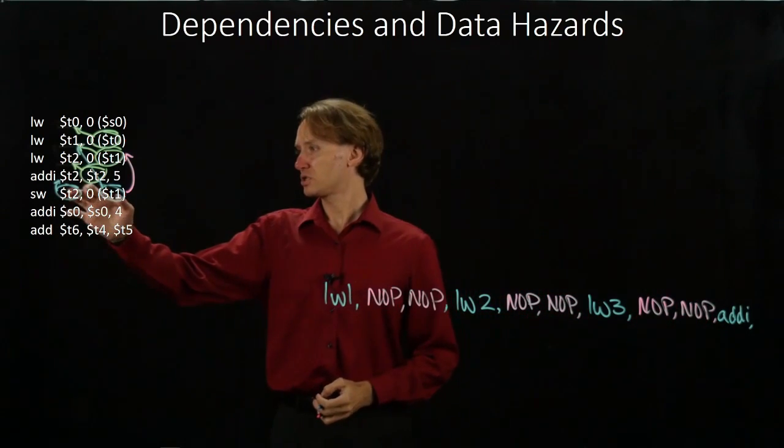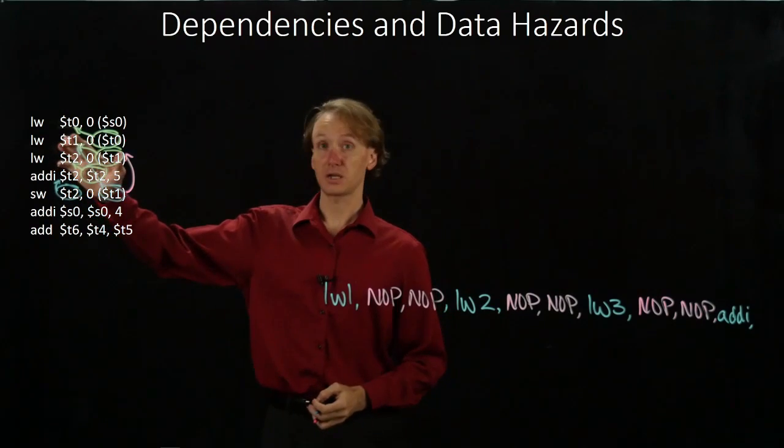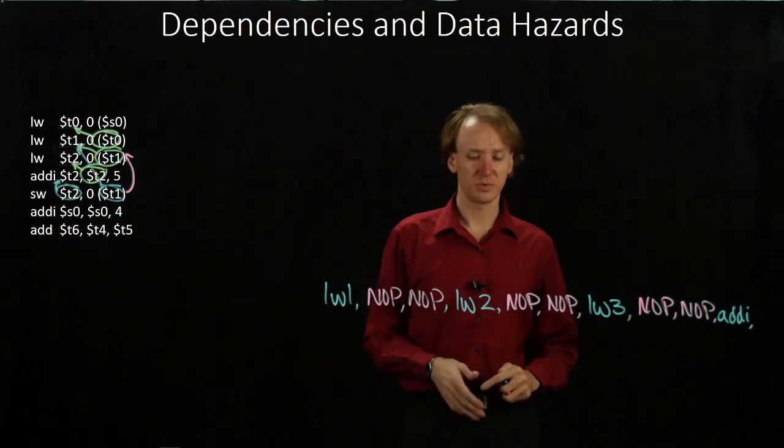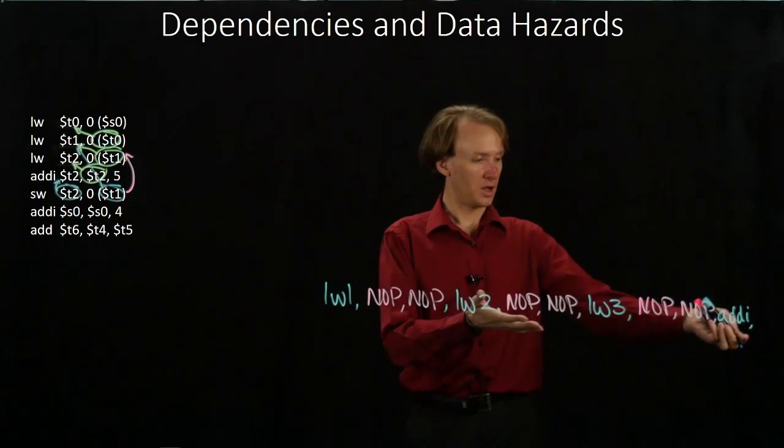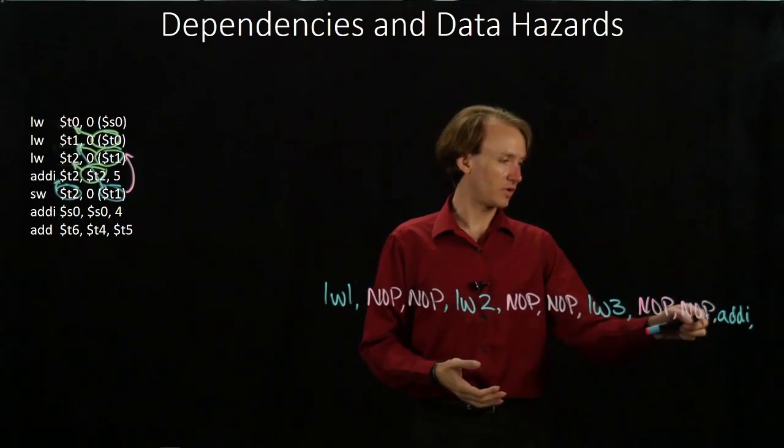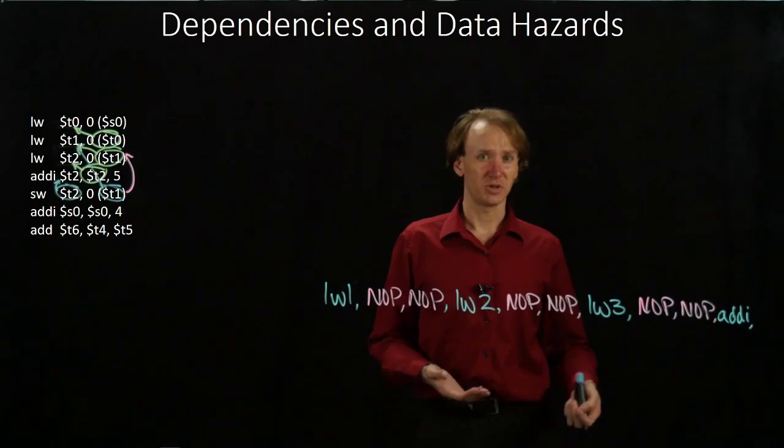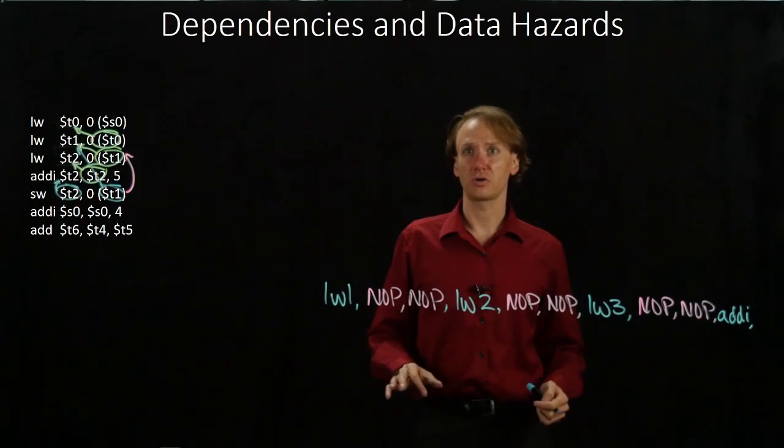My store word instruction depends on the results of the second load word. So I need at least two cycles between load word number two and my store word instruction. I have one, two, three, four, five, six instructions in between those already. So I'm already covered on that dependency.